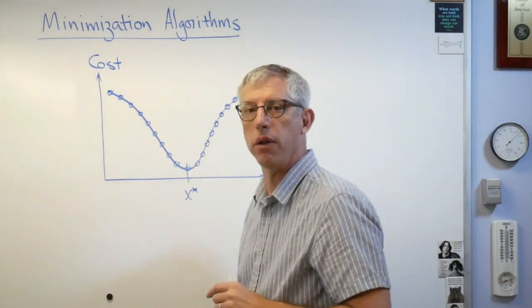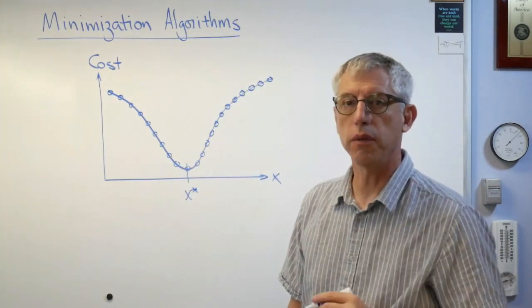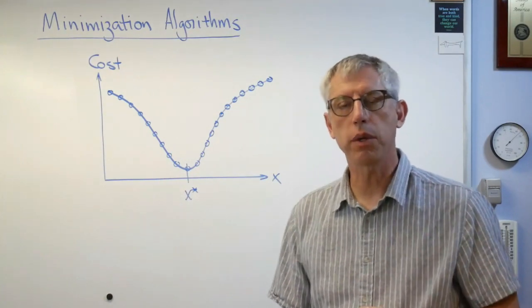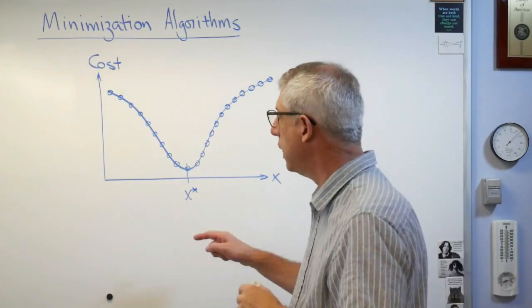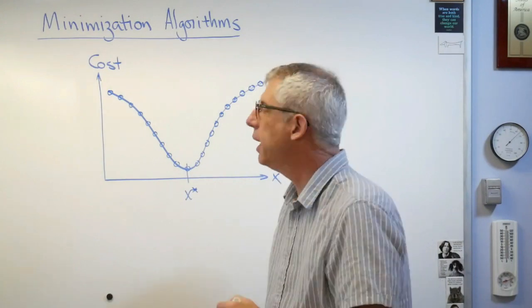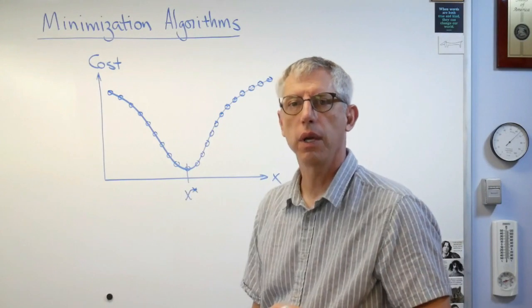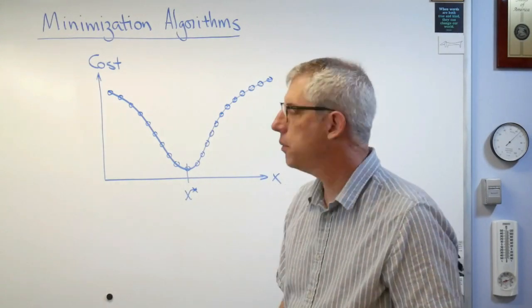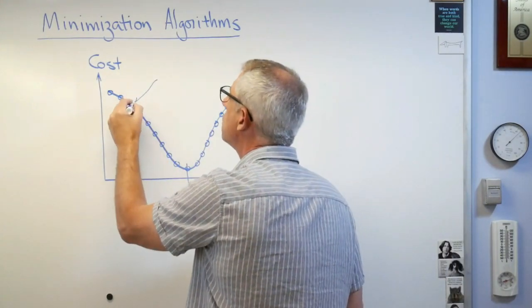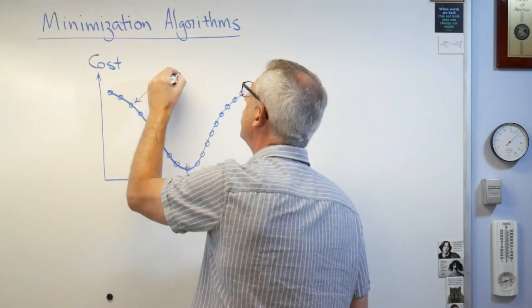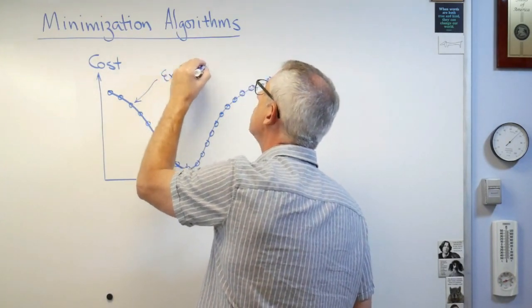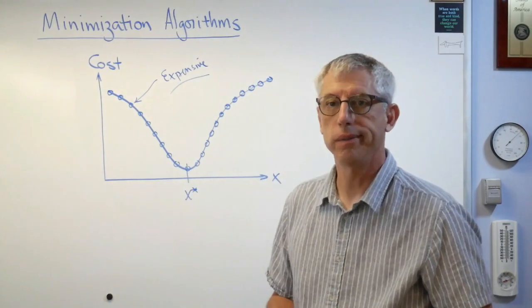Now, this is fine if those dots are really cheap to evaluate. The sample problems we use in this class really are. You really can just hit enter on the computer, and it'll just evaluate the objective function a whole bunch of times, and you can just draw the curve. In practical problems, each of those points can be expensive, sometimes very expensive.